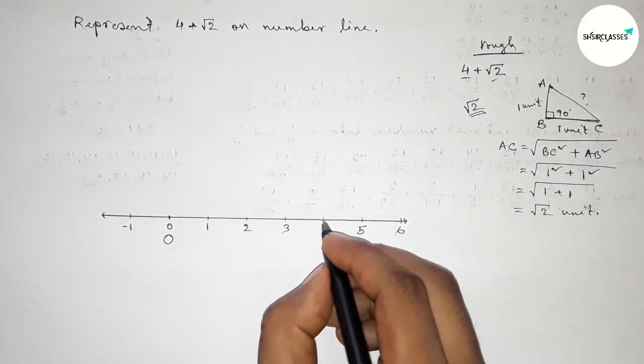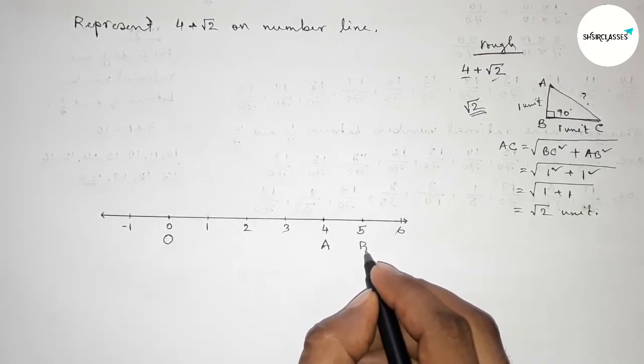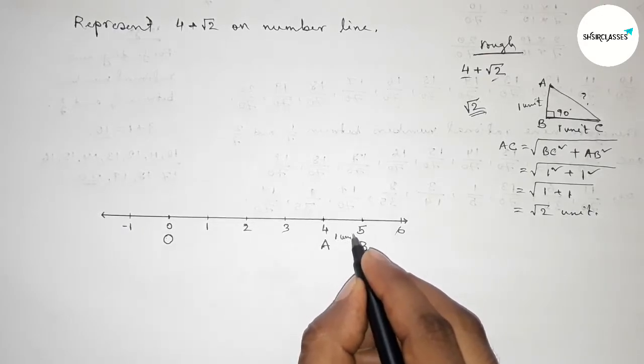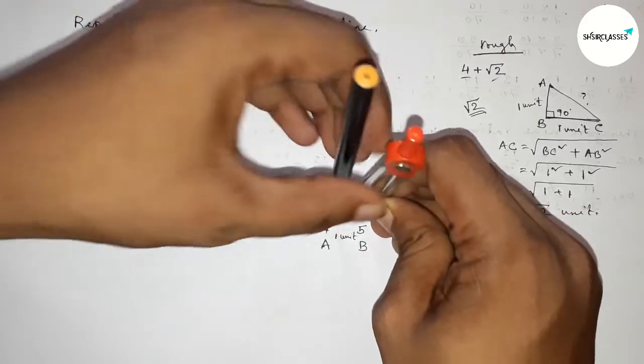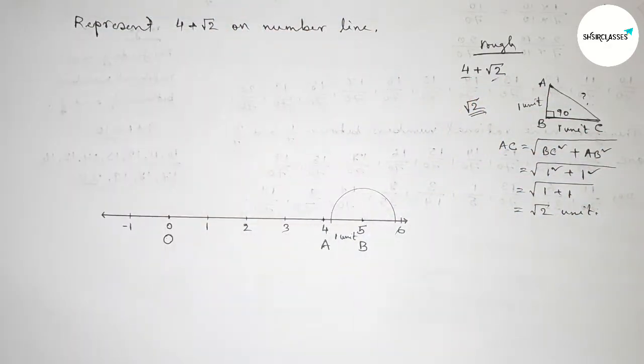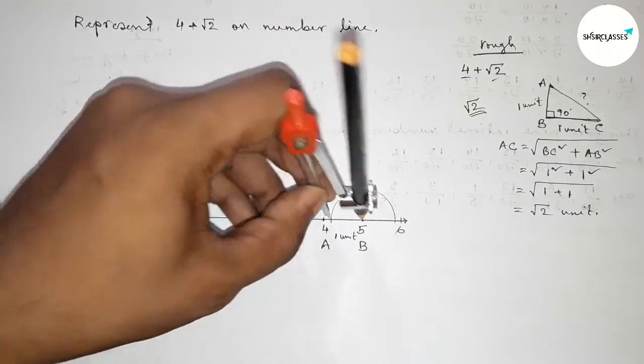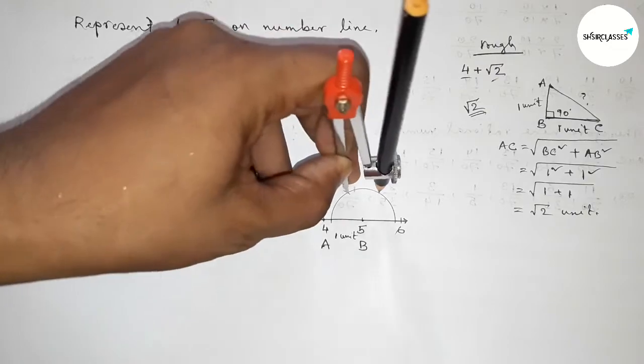Now I am going to use this concept from 0, 4 to 5, so between 4 to 5 and taking point B, and this is 1 unit length. Now we have to first construct a 90 degree angle, so taking any length and drawing an arc by this way.